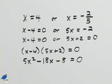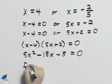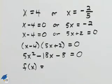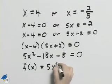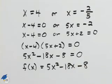Now that's set equal to 0 which indicates how we found those x-intercepts. Finally we'll give this function a name, we'll call it f of x equals 5x squared minus 18x minus 8.